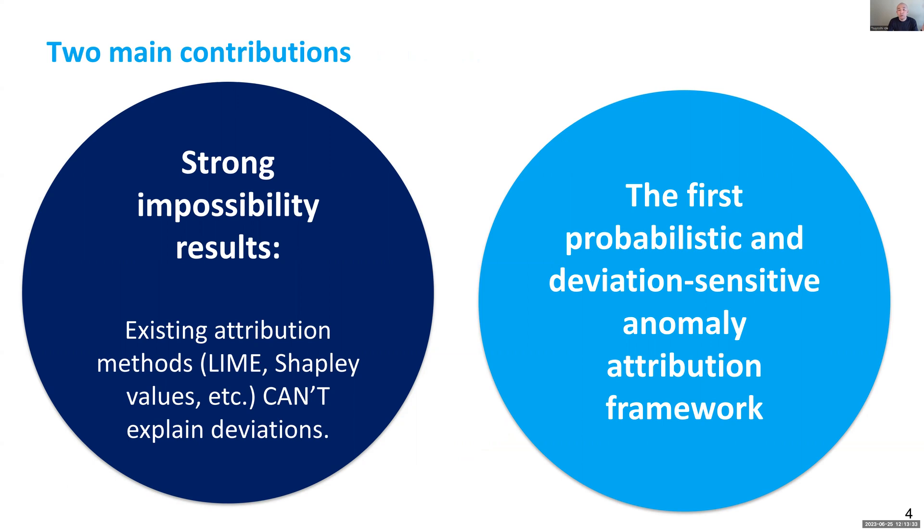The first, we've got a very strong theoretical result which shows the impossibility of anomaly attribution by using existing methods like LIME and Shapley value and integrated gradient.